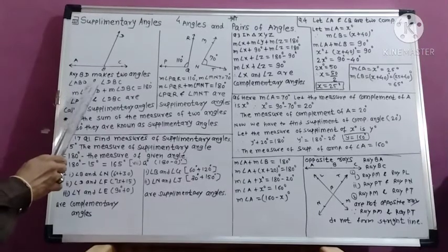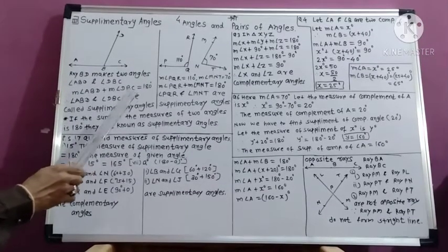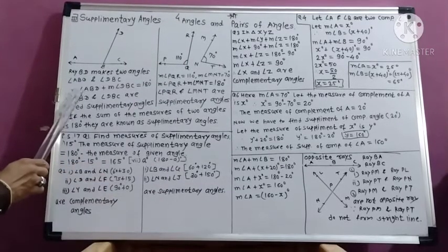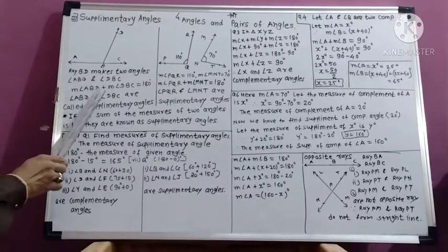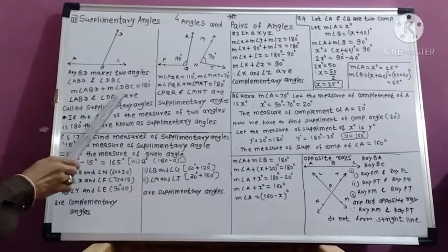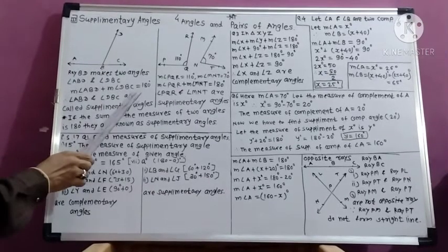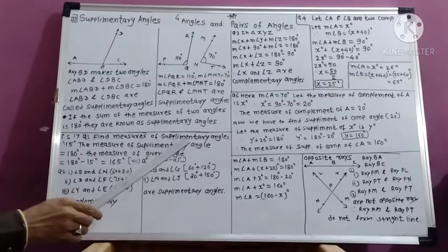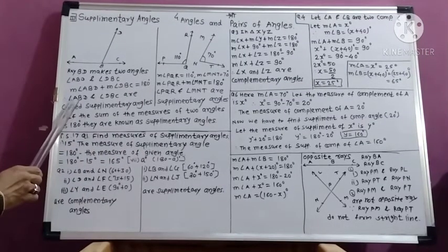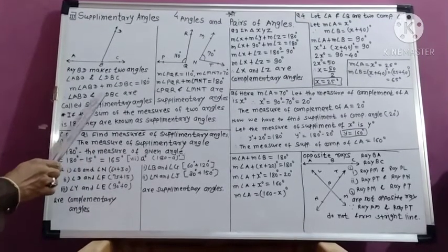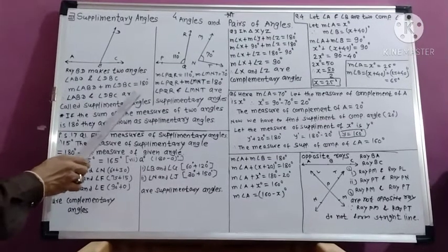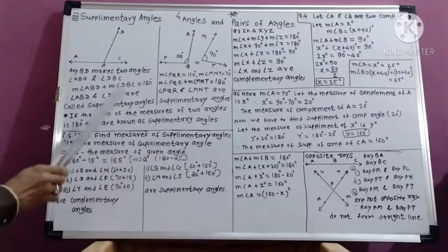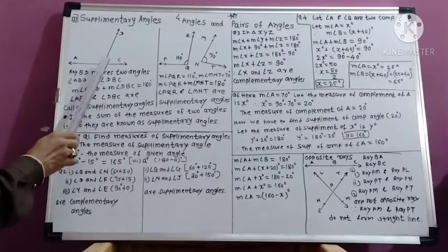If we measure these two angles using a protractor, we find that the measure of angle ABD plus the measure of angle DBC equals 180 degrees. Therefore, angle ABD and angle DBC are called supplementary angles.